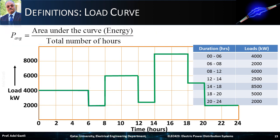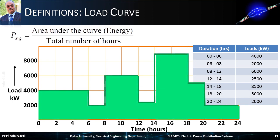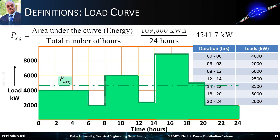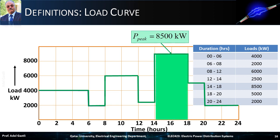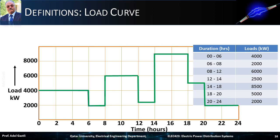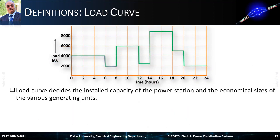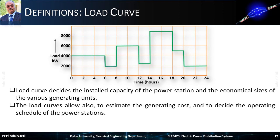The average load in a particular day equals the total energy, or area under the curve, divided by the total number of hours. In this case, it is 109,000 kWh divided by 24 hours, which equals 4,541.7 kilowatts. The peak load during the day is 8,500 kilowatts, occurring between 2 and 6 p.m., which also represents the maximum demand on the power station. The load curve decides the installed capacity of the power station and the economical sizes of the various generating units. It also allows estimation of generating cost and scheduling of power station operations.